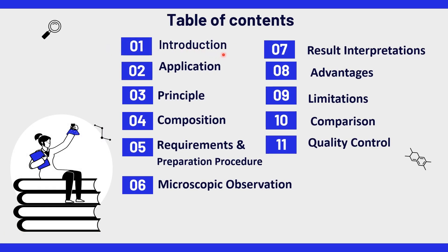Let us first discuss about India ink staining. How do we discover the external structure of a microorganism? The answer lies in the India ink staining technique itself. In this presentation, we will discuss the application, principle, composition, requirement and preparation procedure of India ink staining, microscopic observation and result interpretations, advantages and limitations, comparison of India ink staining with other staining techniques, and quality control of India ink staining.